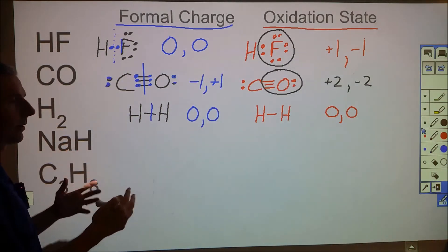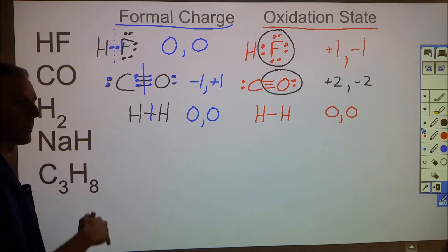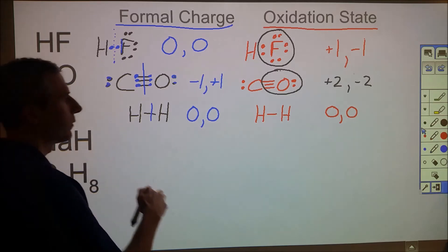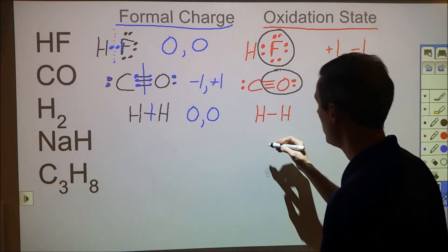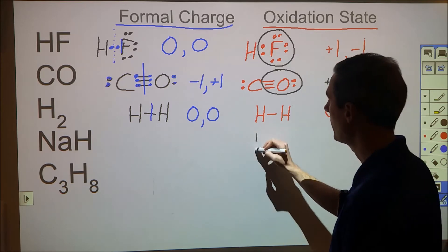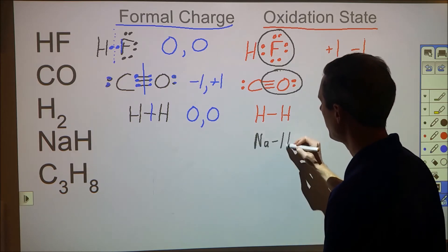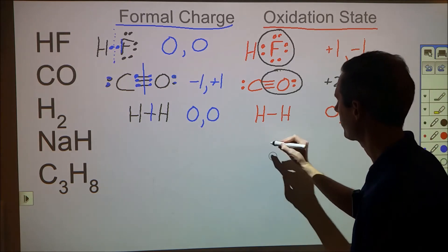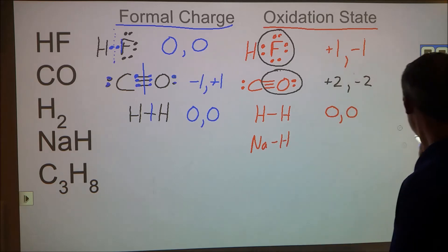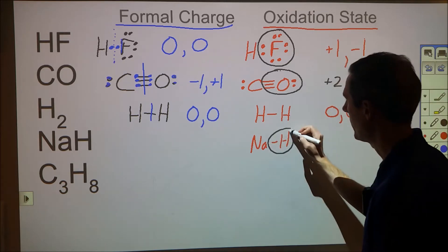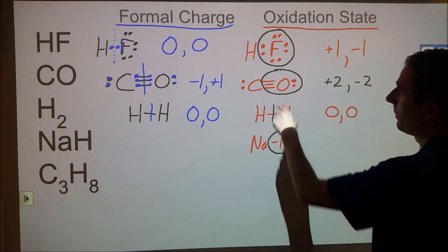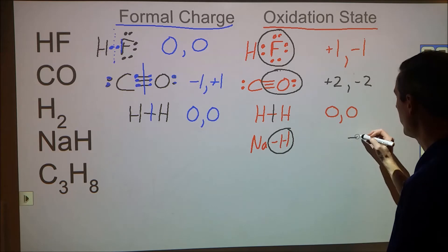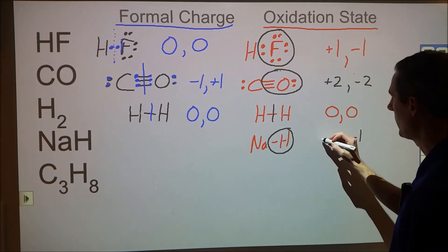For sodium hydride, it's ionic so we won't misrepresent it with a covalent bond for formal charge. But for oxidation states it's worth noting: hydrogen is more electronegative than sodium, so if we represent this as a covalent bond, hydrogen gets the electrons. This is a case where hydrogen has a −1 oxidation state and sodium gets the +1.